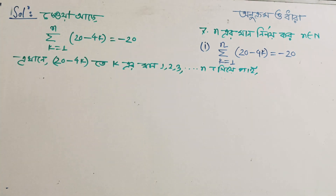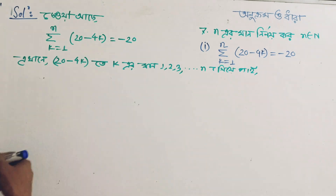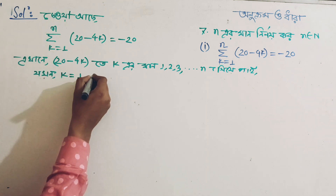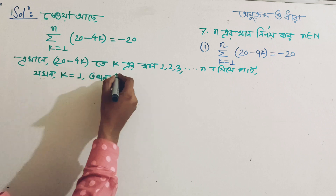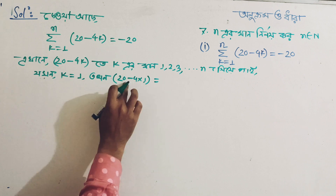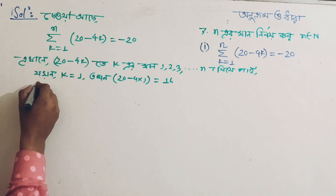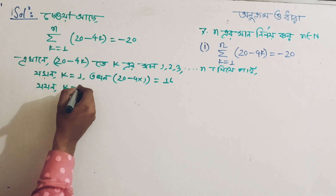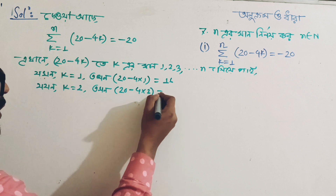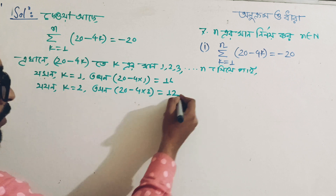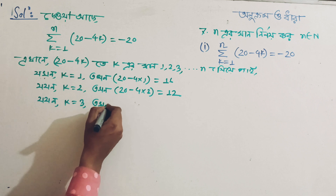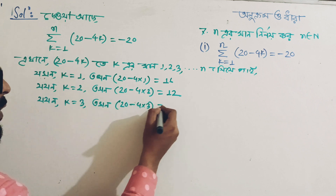The equation is in terms of k. When k is equal to 1, we get 20 - 4(1). When k = 2, we get 20 - 4(2). When k = 3, we get 20 - 4(3).